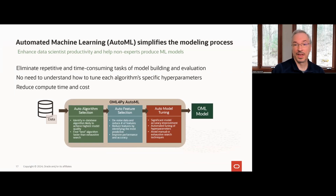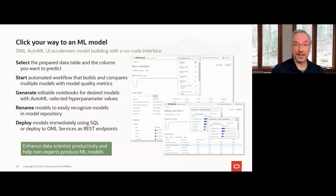So this is where AutoML comes in — to eliminate the repetitive tasks of model building and evaluation. AutoML takes over the model tuning process, so there's no need for you to understand how to tune each algorithm's specific hyperparameters. AutoML is available programmatically through OML4Py and supports automated algorithm and feature selection, as well as model tuning and selection. Building upon OML4Py's AutoML API, the AutoML UI is a no-code user interface supporting automated machine learning for both data scientist productivity and non-expert user access to in-database algorithms. The AutoML UI automates model building with minimal user input — just specify the data and the target in what's called an experiment, and the tool does the rest. However, you can adjust settings such as the number of top models to select, the model selection metric, the Autonomous Database service level which controls parallelism, and even the specific algorithms you want to consider.